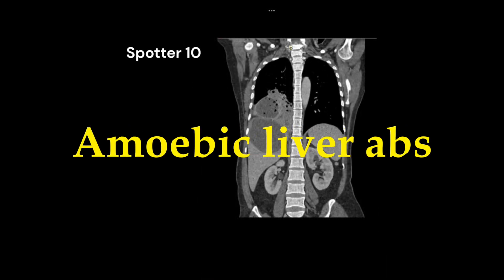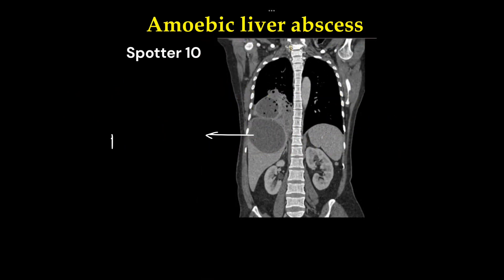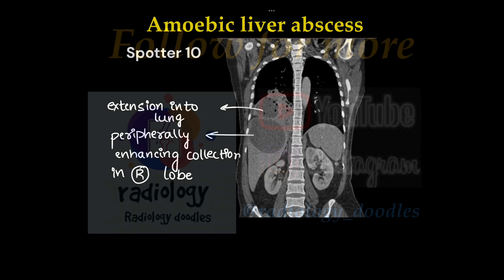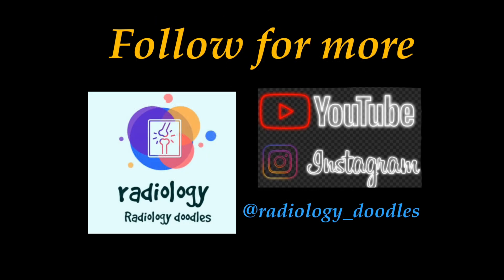This is a case of amoebic liver abscess. There is a peripherally enhancing collection or cystic lesion in the liver, indicating an abscess. The right lobe is more characteristic for amoebic abscess, and it can have extension to the lung, as seen in this case. For more such spotter videos, follow our page on YouTube and Instagram.